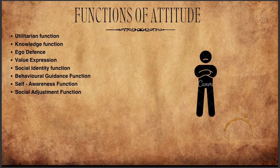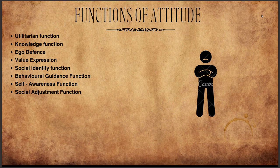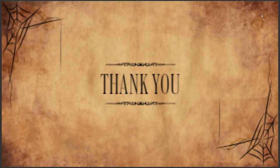Next is self-awareness — attitudes can help people approach things that are beneficial to them and avoid things that are harmful. For example, a positive attitude towards healthy eating habits while avoiding unhealthy ones. Finally, the social adjustment function — attitudes help in social adjustment by simplifying our perception of the world. An open-minded attitude helps in adopting diverse cultural perspectives, facilitating social interaction and fostering understanding in a globalized world.